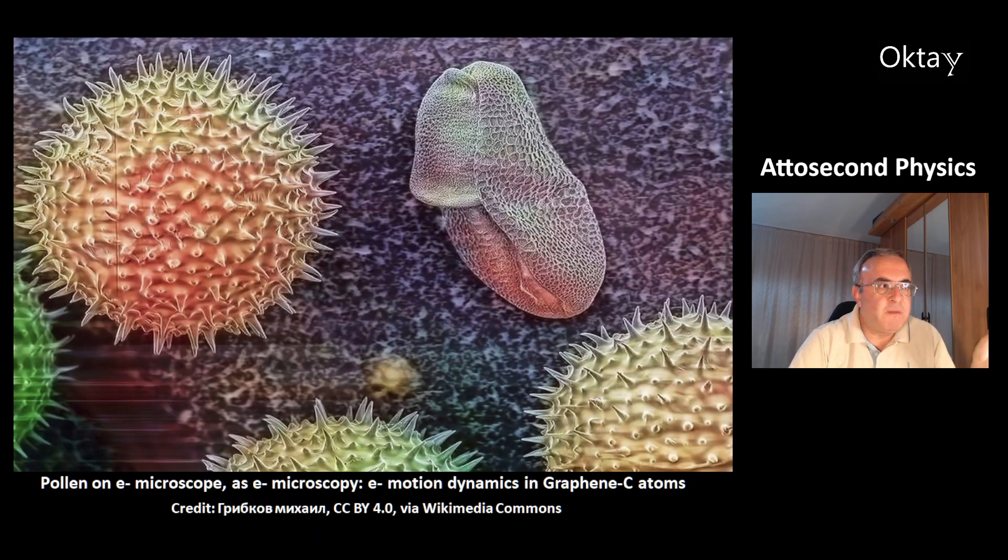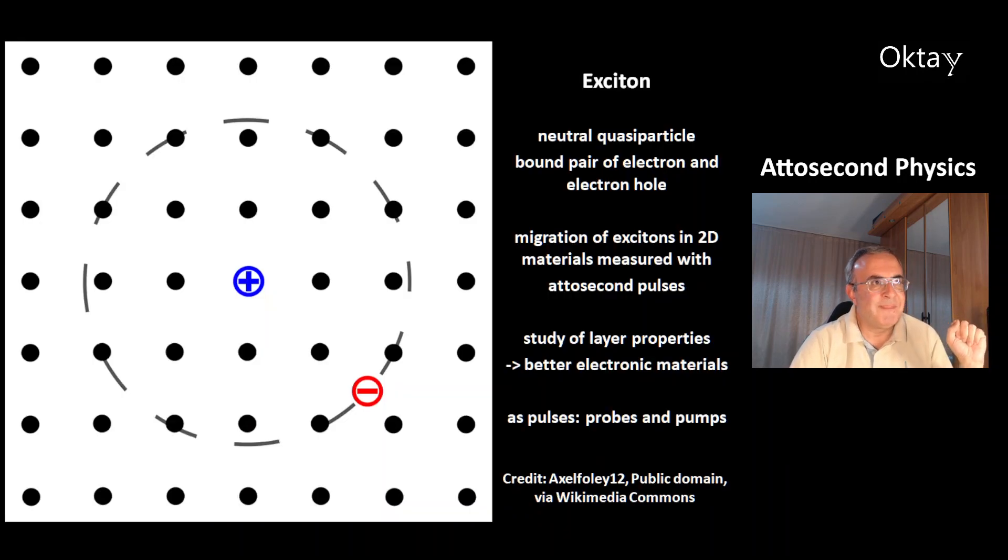This is a nice electron microscope picture of pollen. With attosecond microscopy you have new possibilities. For example, you can study the electron motion dynamics in graphene carbon atoms. This is a picture of the exciton, which is a neutral quasi-particle. This is a bound pair of an electron and an electron hole. And the migration of excitons in 2D materials can also be measured with attosecond pulses. This is important for studying layer properties. And this will lead to better electronic materials.